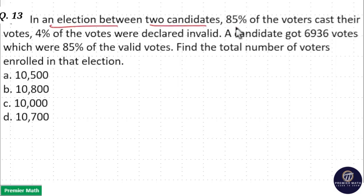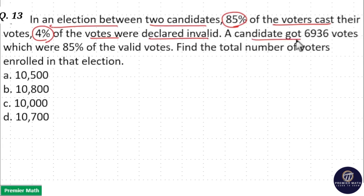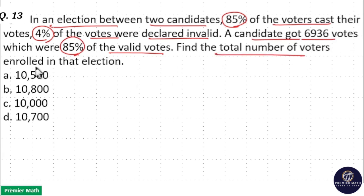In an election between two candidates, 85% of the voters cast their vote, 4% of the votes were declared invalid, and a candidate got 6936 votes which were 85% of the valid votes. Find the total number of voters enrolled in that election.